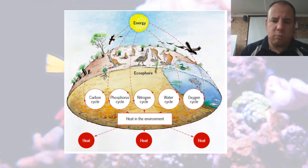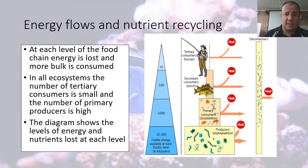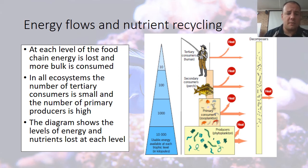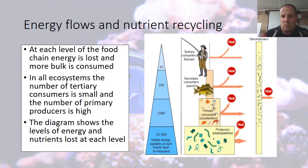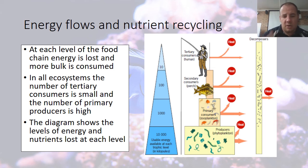Here's an example of what I've been talking about in diagrammatic form. We've got different cycles, heat being lost, and the source of all our energy is the sun. When I've talked about trophic flows, each level has more energy lost the more bulk is consumed. In all key systems, the number of tertiary consumers is small and the number of primary producers is high. There are more producers than consumers — if you look at humans in that diagram, there's one human, then several fish, and plankton outnumbers fish, and fish outnumber humans. The diagram shows the levels of energy and nutrients lost at each level. I hope that explains what food chains and food webs are, why they're so important, and the impact they have on ecosystems.